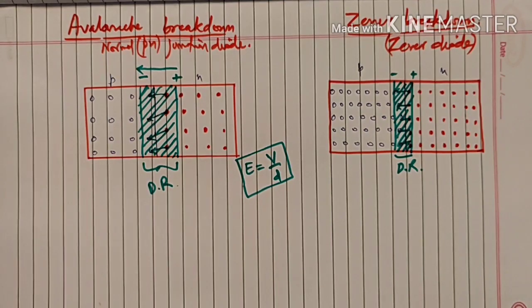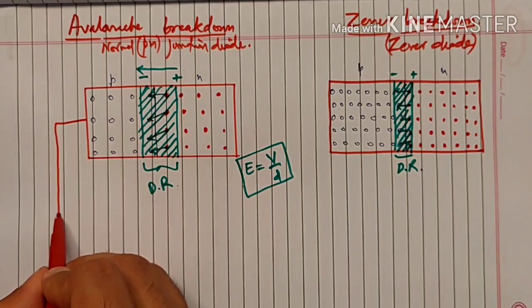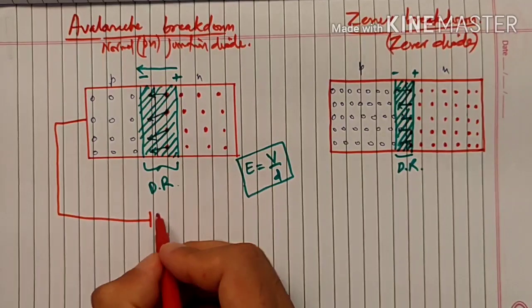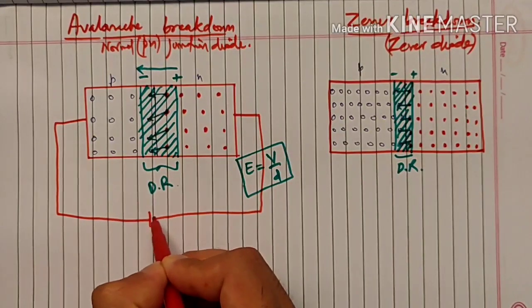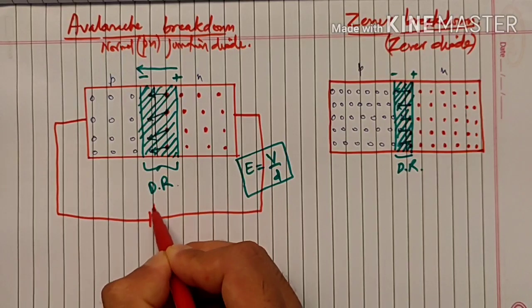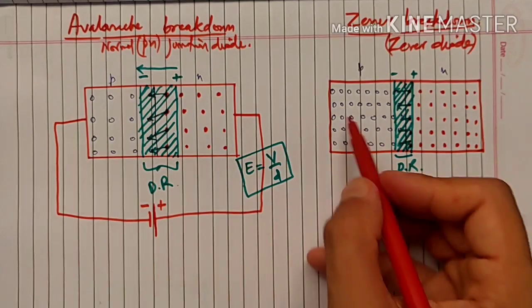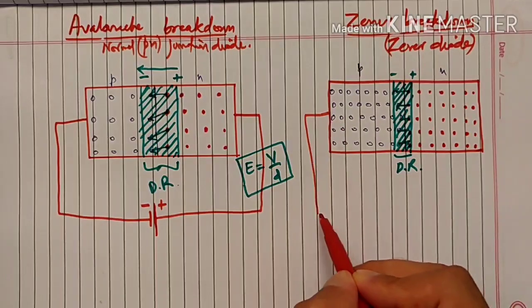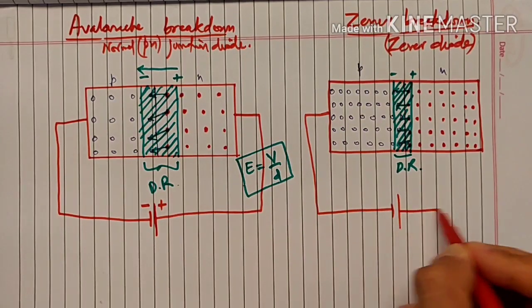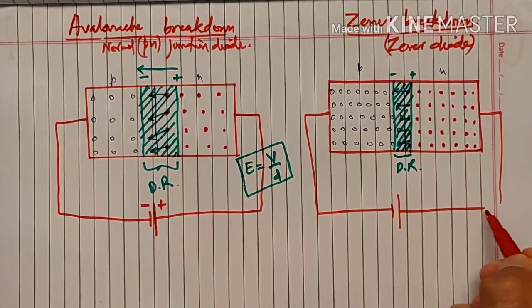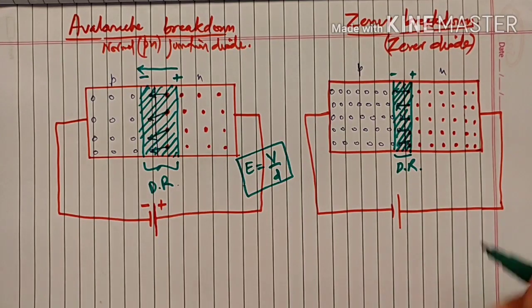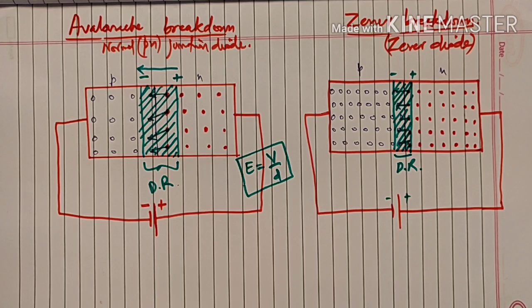अब अगर हम दोनों diodes को reverse bias करें - P region को connect करें negative terminal of battery के साथ और N region को connect करें positive terminal of battery के साथ। इसी तरह से इस diode को भी reverse bias करेंगे। Both the diodes are reverse biased.